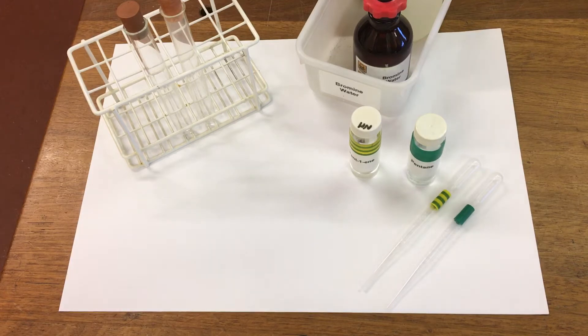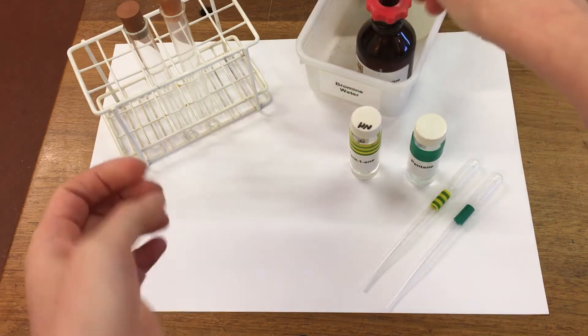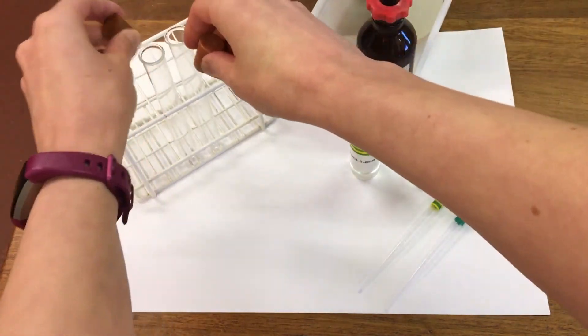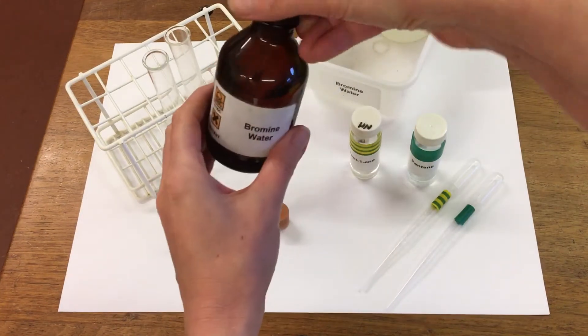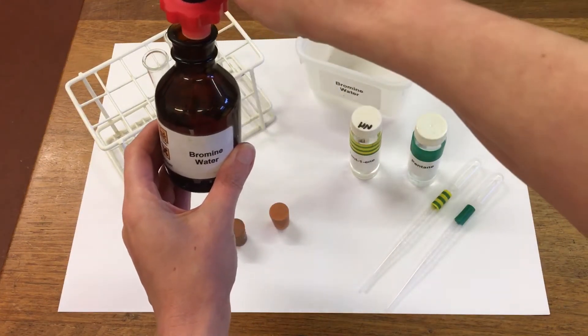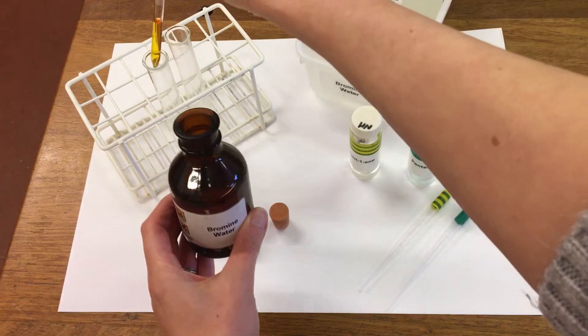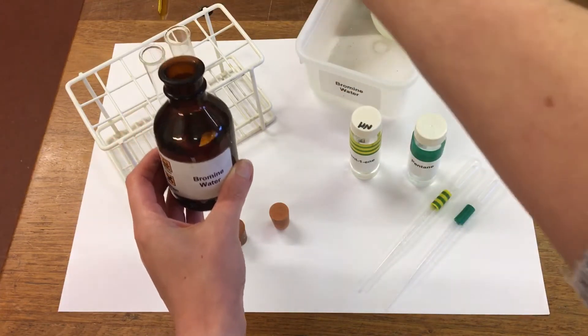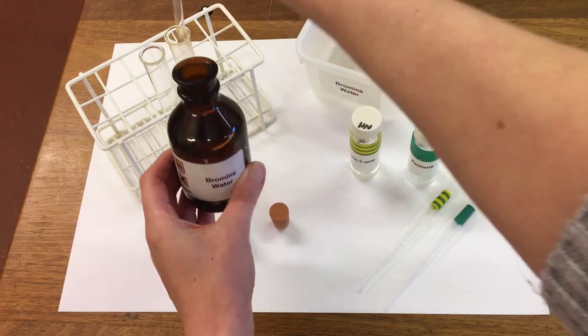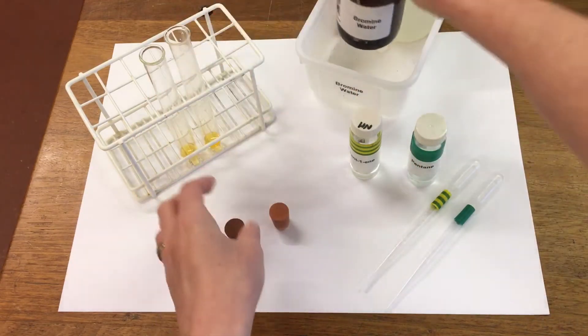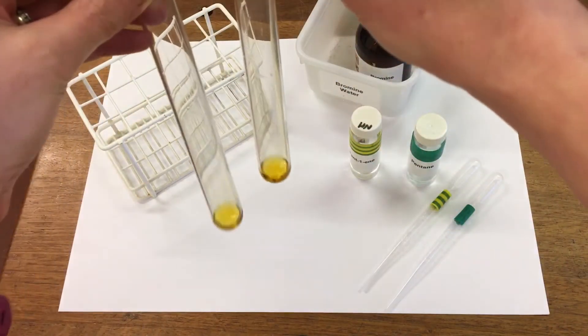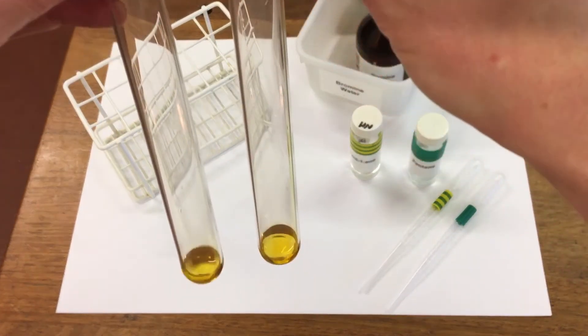First of all, we're going to start with our bromine water, and I'm going to add a few drops into our test tubes. We can see the brown color of the bromine water.